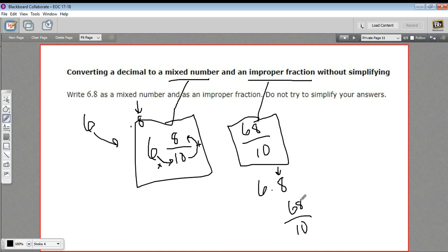Boom, you've got 68 tenths. So that's how to convert a decimal into a mixed number and an improper fraction.